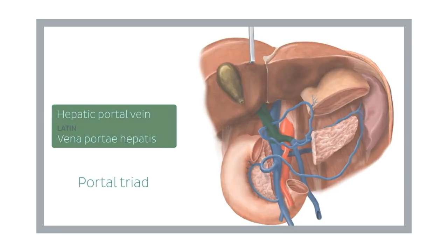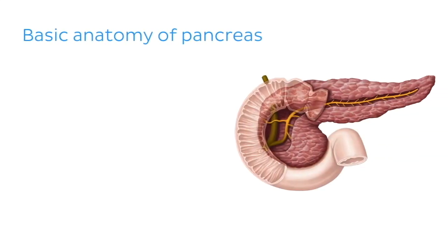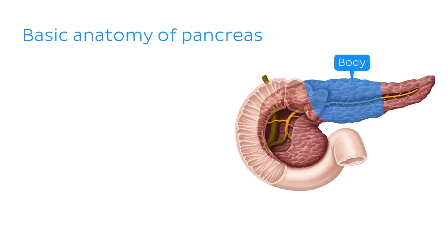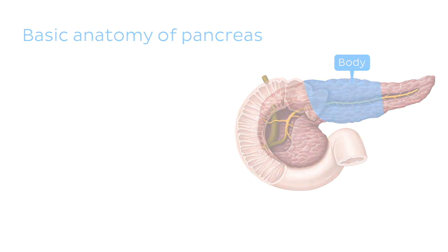Moving on to the basic anatomy of the pancreas, we know that it has well-defined parts along its length. Beginning on the left-hand side, we have the tail, which is the tapered end of the organ located close to the spleen. Moving more medially, we find the body of the pancreas.